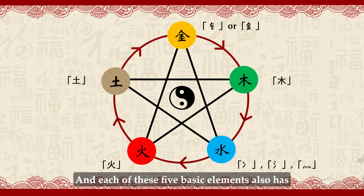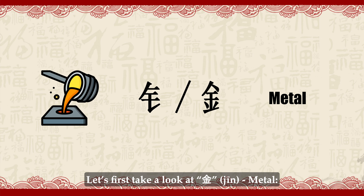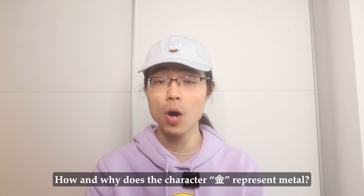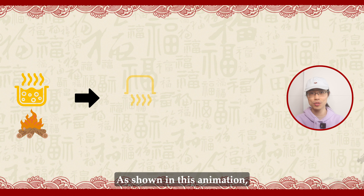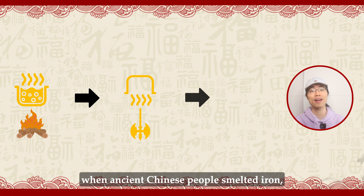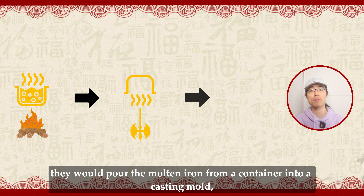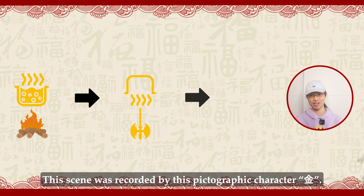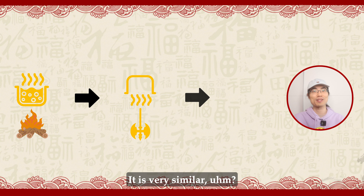Each of these five basic elements also has their corresponding standard components, or so-called radicals. So let's first take a look at Jīn (金), metal. There's an interesting question: how and why does the character Jīn represent metal? As shown in this animation, when ancient Chinese people smelted iron, they would pour the melted iron from a container into a casting mold, where it would take the shape of a Chinese ancient axe. This scene was recorded by this pictographic character Jīn.